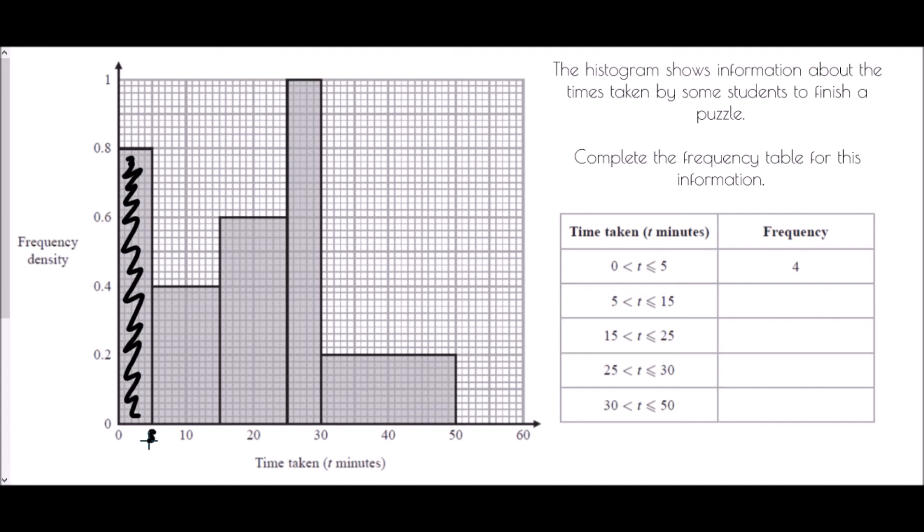This next bar has a width of 10 because it is from 5 to 15, and it has a height of 0.4, so that is 10 times 0.4 giving us another frequency of 4. The next group also has a width of 10, its height is 0.6, so 10 times 0.6 is 6. The next group is only a width of 5, that one has a height of 1, so 5 times 1 is 5. Finally, our last group is from 30 to 50, so that is 20 as a width. We're going to multiply it by its height which is 0.2. 20 times 0.2 is 4. All we've done in order to calculate the frequency from the histogram is to multiply the width by the height, or the width by the frequency density.